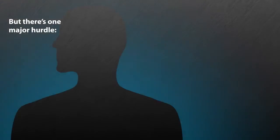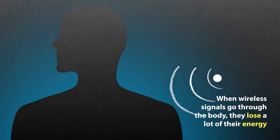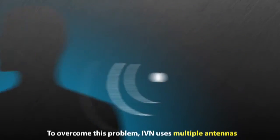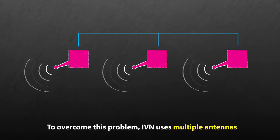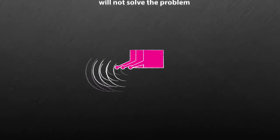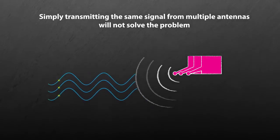But there's one major hurdle. When wireless signals go through the body, they lose a lot of their energy. To overcome this problem while transmitting signals that are safe for humans, IVN uses multiple antennas. But simply transmitting the same signal from multiple antennas will not solve the problem.